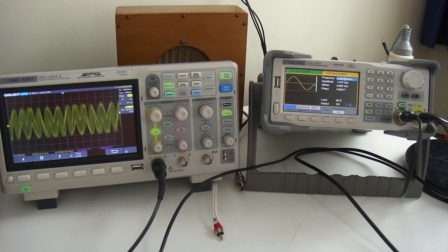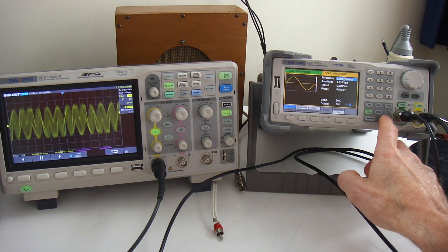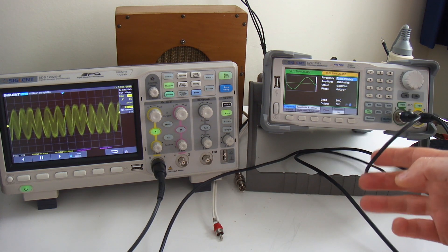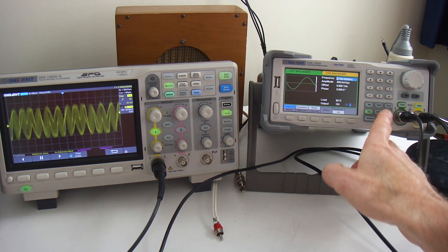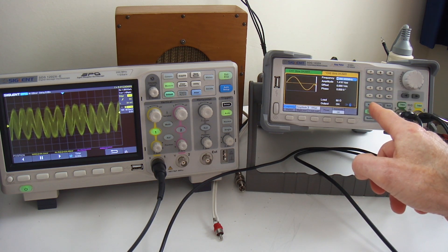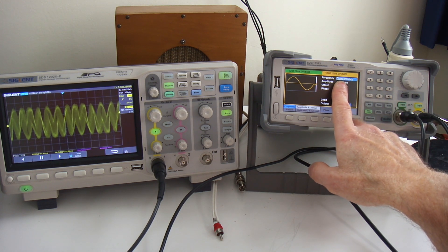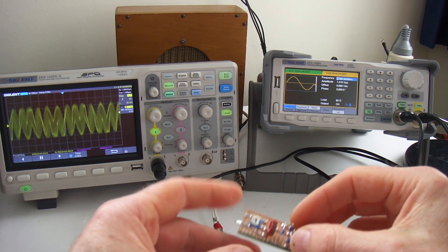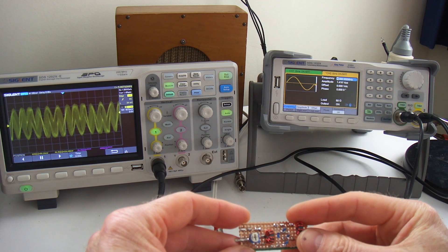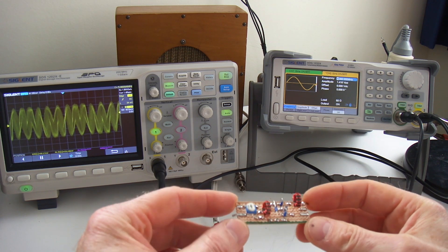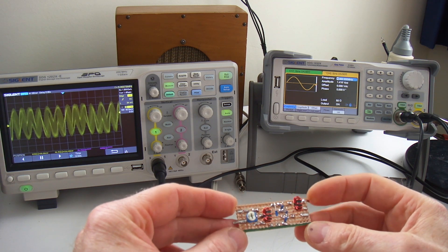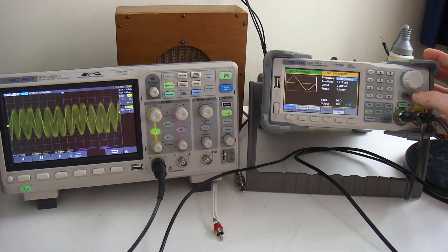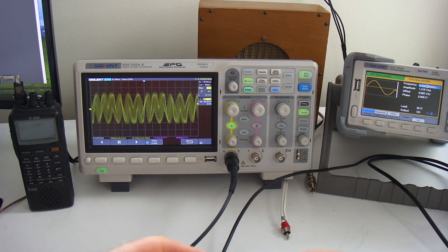What I have here on the right hand side is the signal generator. I have two channels: on channel one is 3.7 megs at 300 millivolts peak to peak simulating my RF coming in from the antenna, and on channel two I've got the local oscillator at 5.3 megahertz at 1.416 volts peak to peak. The SBL1 which I'm trying to emulate is a 7 dBm mixer, so the local oscillator drive at 7 dBm equates to approximately 1.416 volts peak to peak.